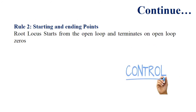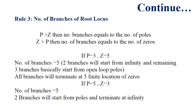Step 2 is basically the starting and ending points of the root locus. The root locus starts from the open-loop poles, or K equals to zero — K is basically the gain of the system. The root locus terminates on either finite open-loop zeros or K equals to infinity.